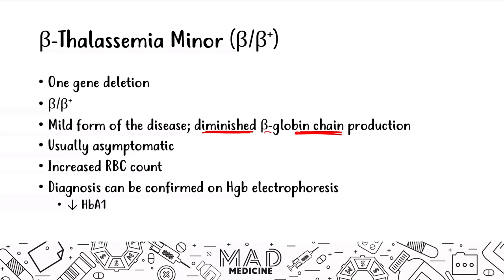On electrophoresis, you're going to see a decrease in hemoglobin A1. Hemoglobin A1 has two alpha chains and two beta chains, and because you are reducing the amount of beta chains, you are going to have decreased A1. But you will have an increase in hemoglobin A2 and fetal hemoglobin. So that should clue you in to beta thalassemia minor — you have a decrease in hemoglobin A1, not a complete knockout.